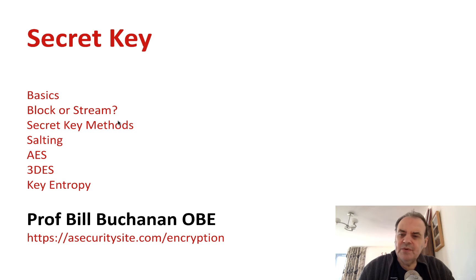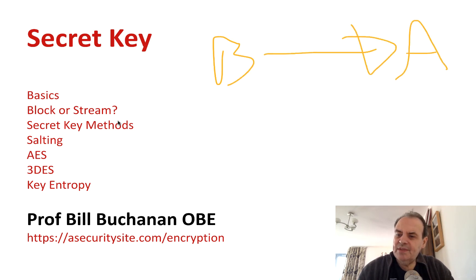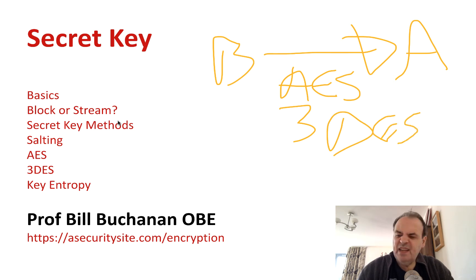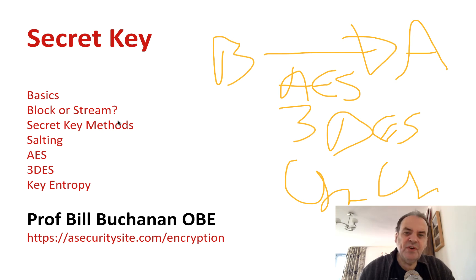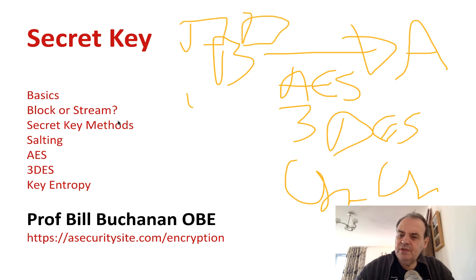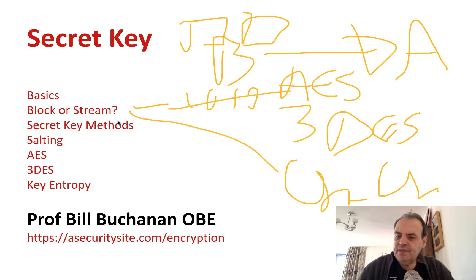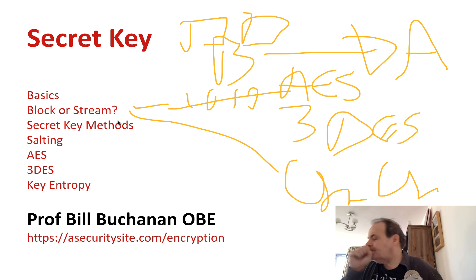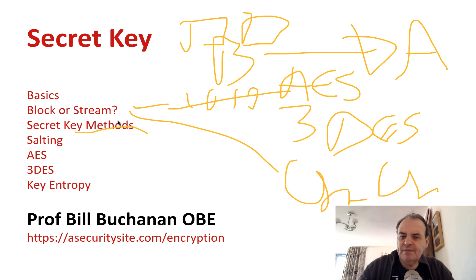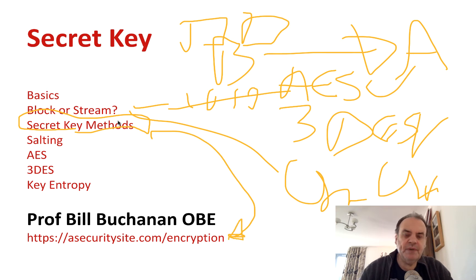Moving on to secret key encryption — the workhorse of what happens when Bob and Alice communicate — the encrypted data sent is typically using something like AES, 3DES, or a whole range of algorithms. There's even a method called ChaCha, which is also used. We'll look at whether we should take blocks of data and encrypt them as blocks, or operate on a stream of ones and zeros as they come along. AES is a block cipher; ChaCha is a stream cipher. Stream ciphers are much faster than block ciphers.